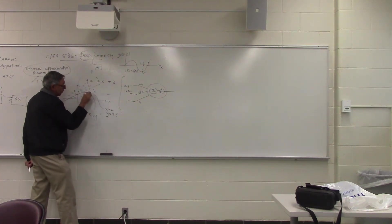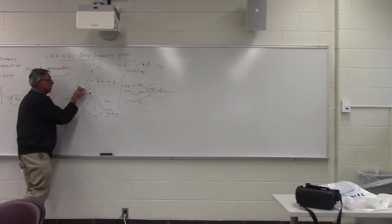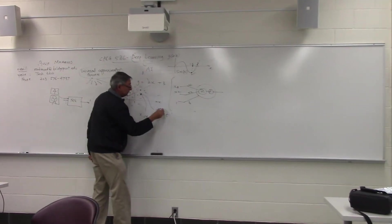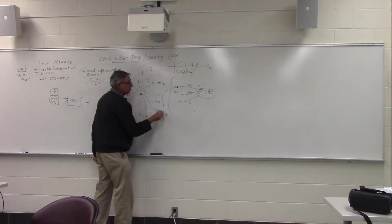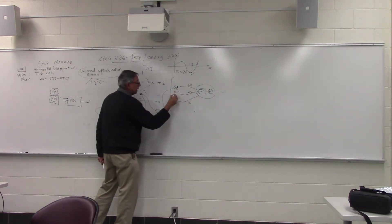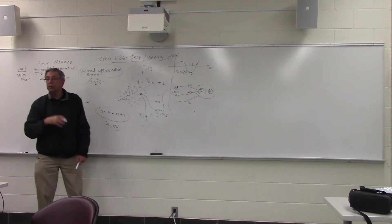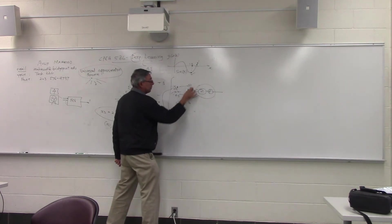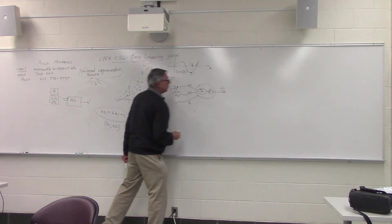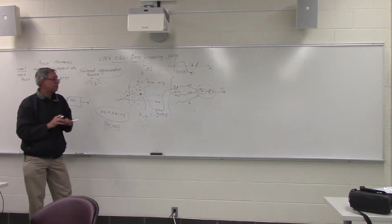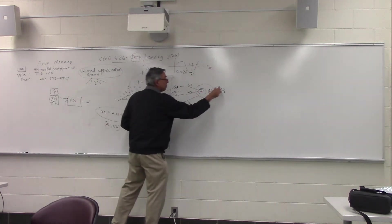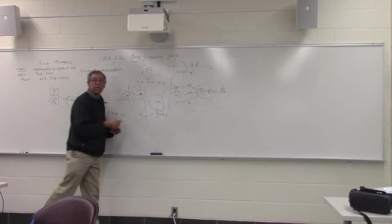If I wanted to test whether this point belongs to the X category or the O category, what will we feed to our network? We'll feed it X1 of 2 and X2 of 4.5. Based on whatever weights it has learned, it will multiply, add, and produce the output. If it produces an output of 0 or close to 0, it belongs to X — it's below the line. If it produces an output of 1, then it's above the line.